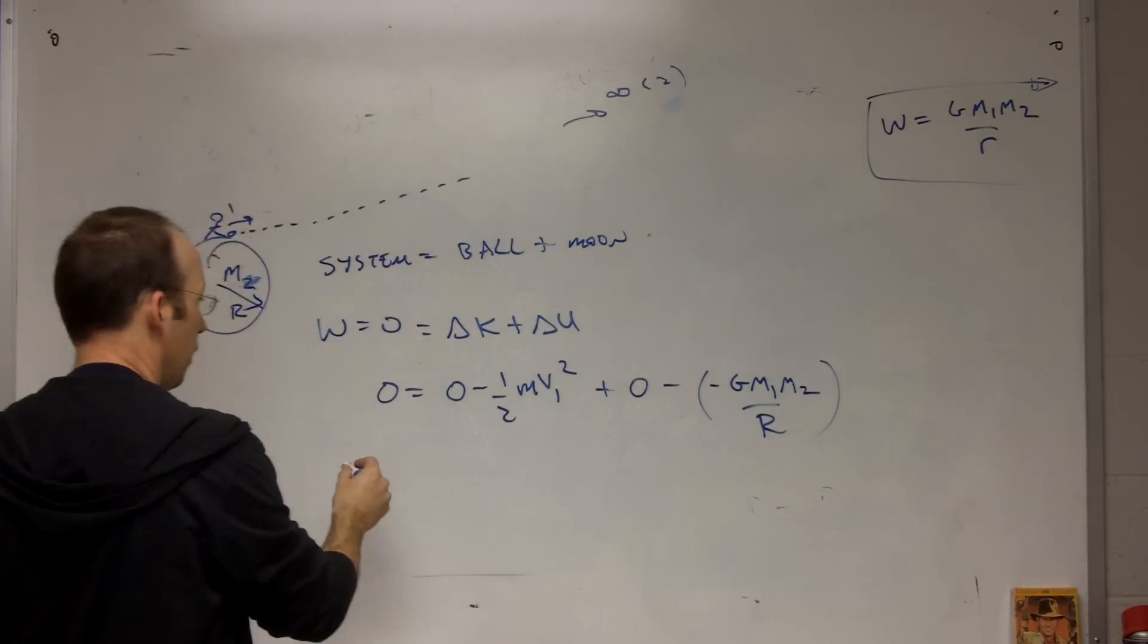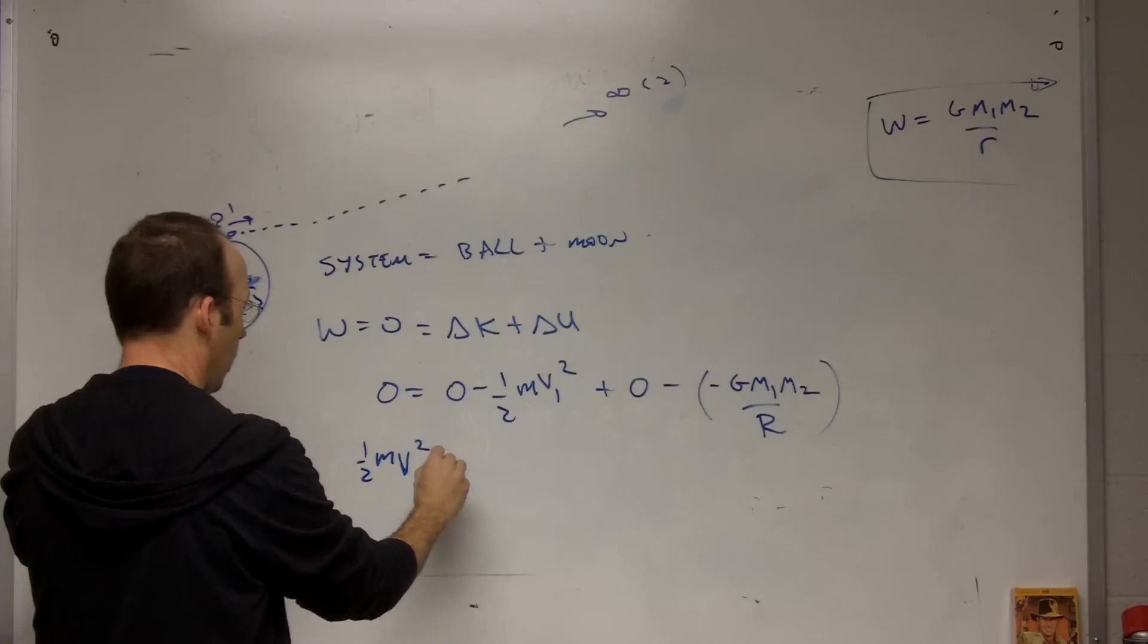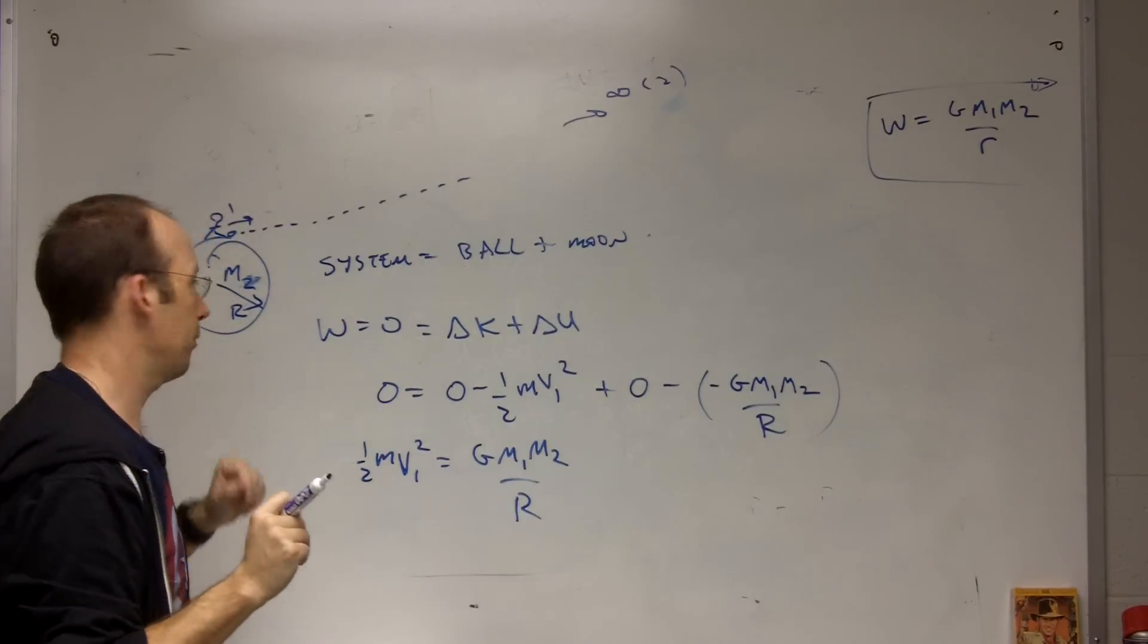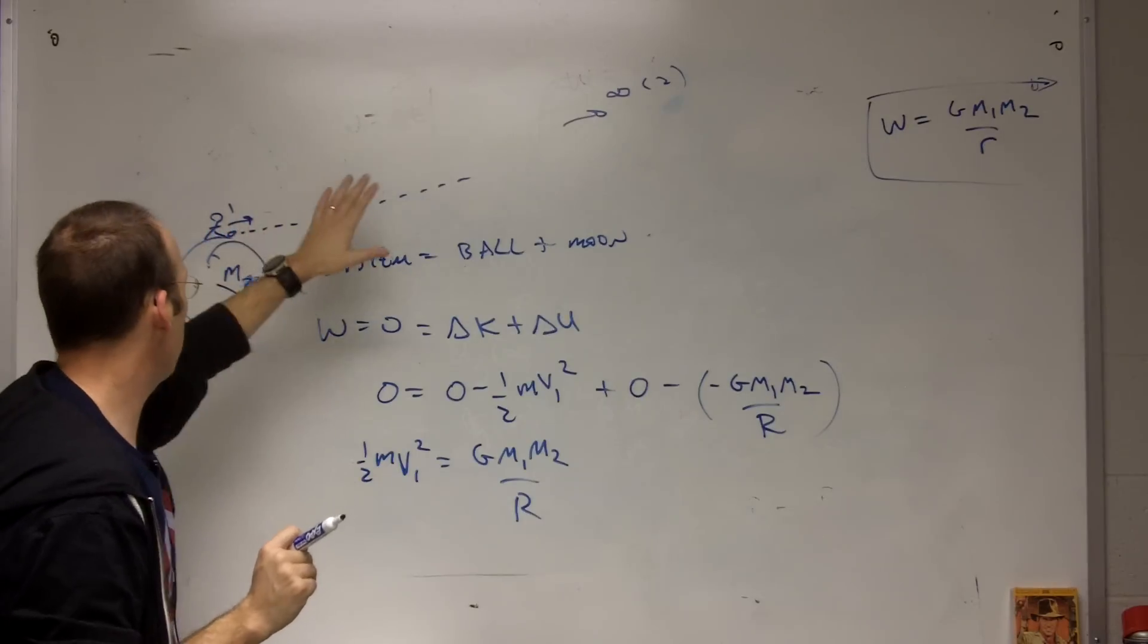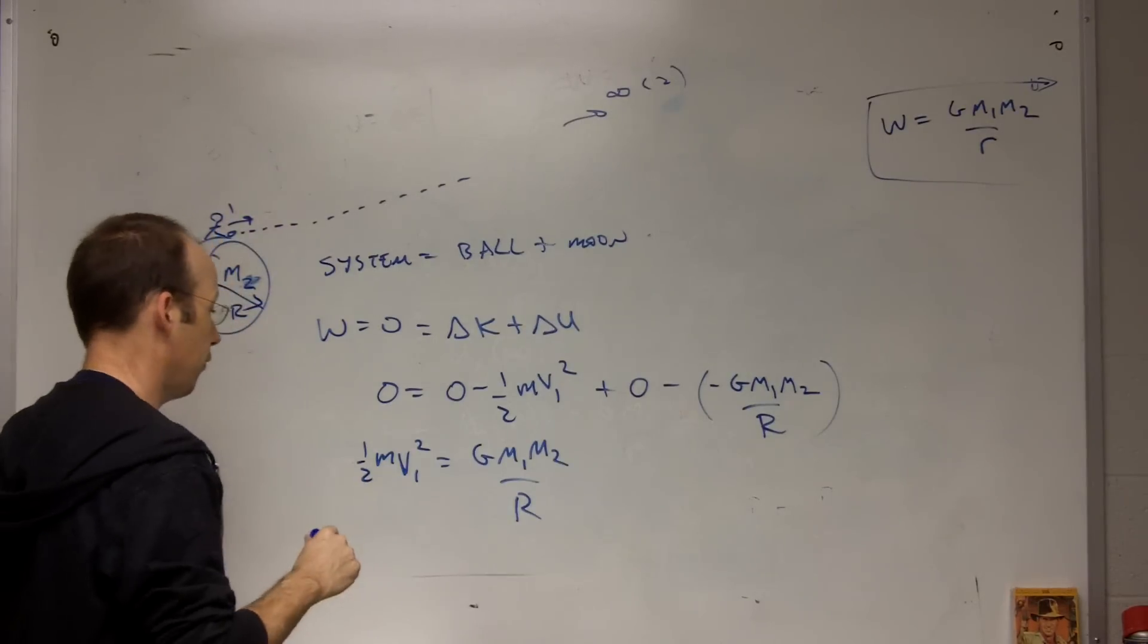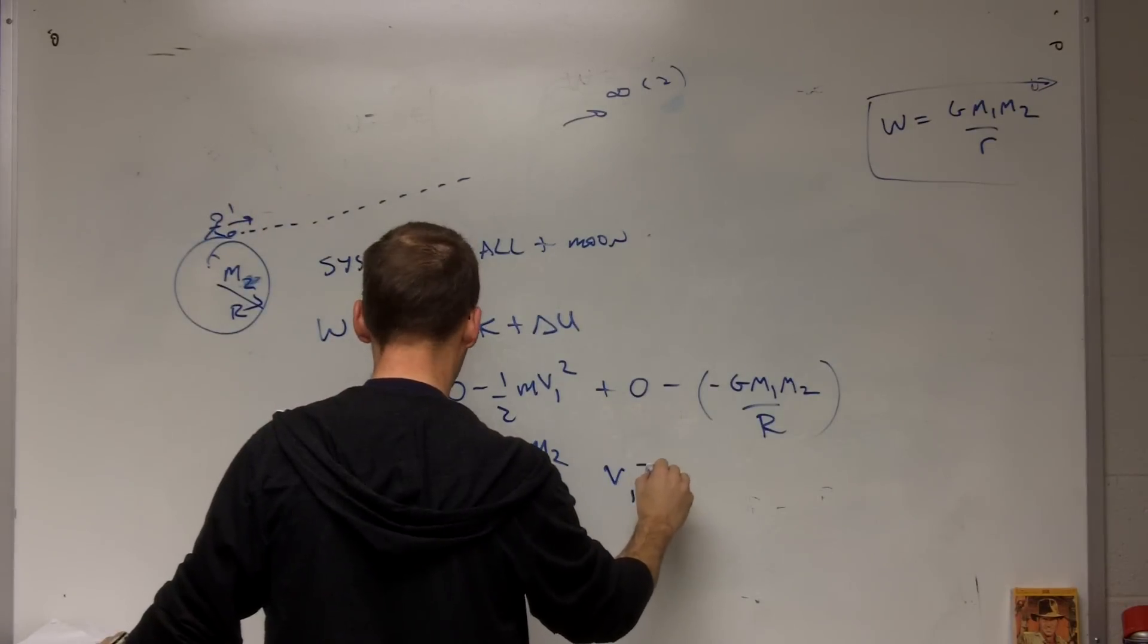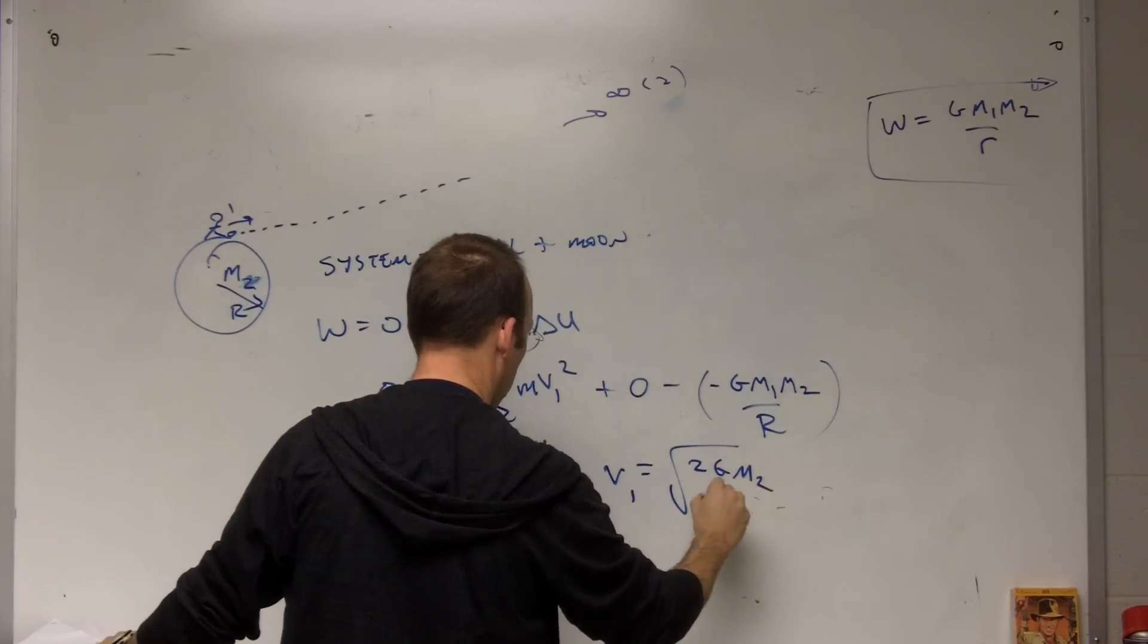So this is a positive number. So then I get one half mv one squared equals g m one m two over R. And there is something I'm assuming here. I'm assuming that if I hit this ball off the moon, the moon actually will recoil. But I've assumed that kinetic energy is negligible. And it's an okay assumption for a large moon, but we can look at that later. So these masses cancel, and I get v one equals the square root of two g m two over R.